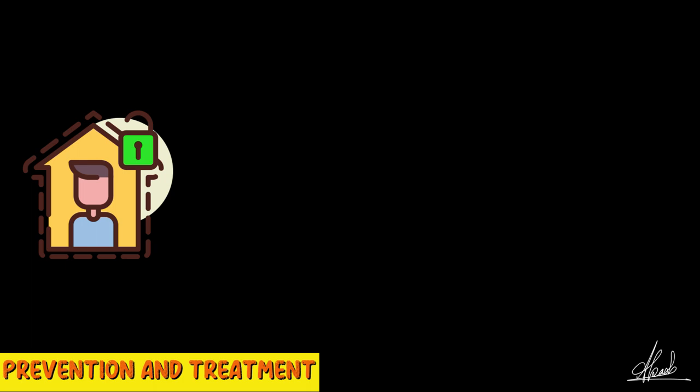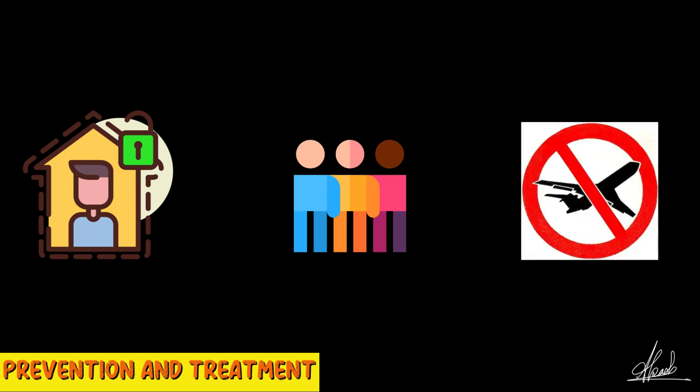Finally, everyone is advised to stay inside their home until the situation is a bit more stable. Everyone is advised to avoid large gatherings and avoid traveling, as these can spread the disease rapidly. Quarantining yourself inside your house, not going outside or traveling to other states or countries, will help stop the spread of the disease. Although it has spread massively throughout the world, preventing yourself from these activities will help stop the disease from spreading further.